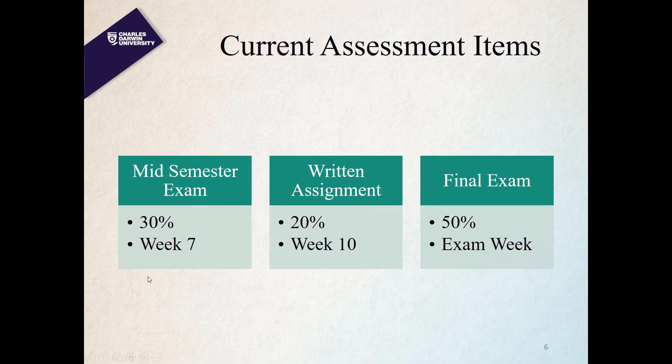The timing of assessment is more problematic. The first assessment is in week 7, so problems with students cannot be identified before that point. By the time feedback or results are given, it is week 9. The written assignment submitted in week 10 yields feedback only by week 12, which is no longer useful for the final exam. There is nothing for students to submit before mid-semester, making it hectic afterward.